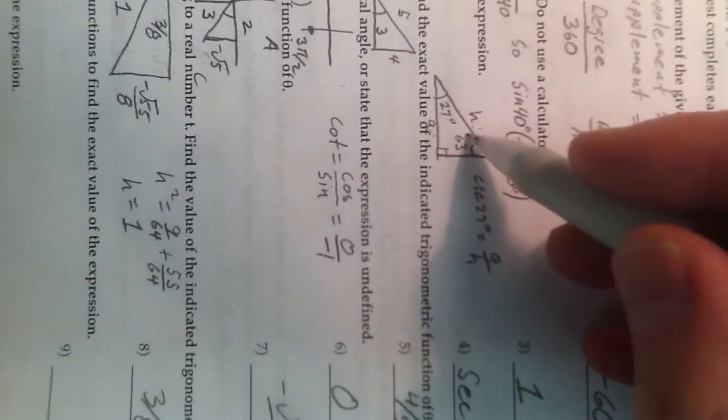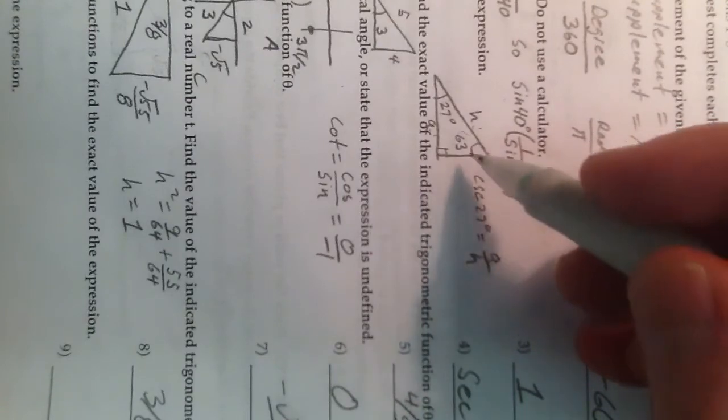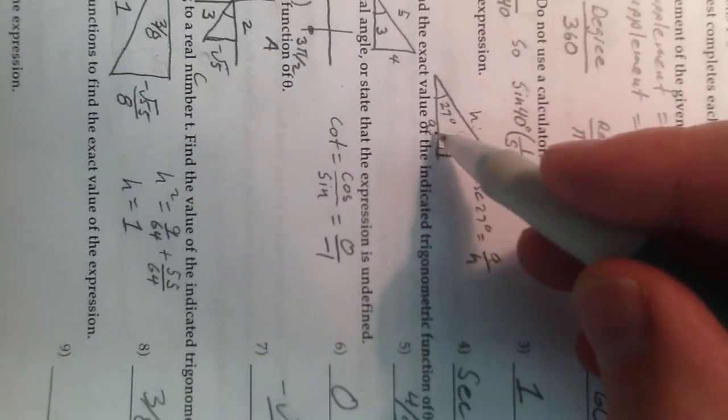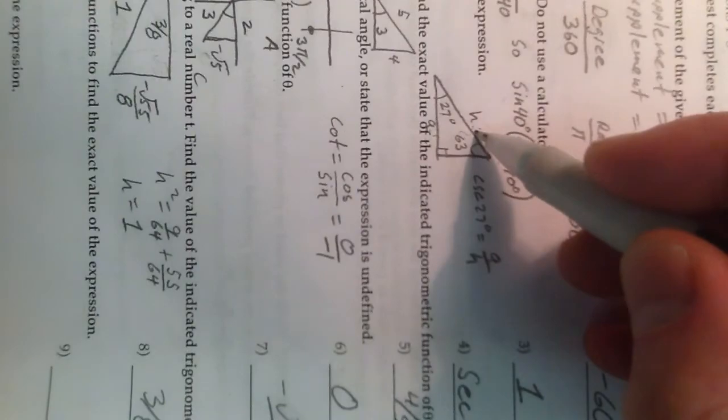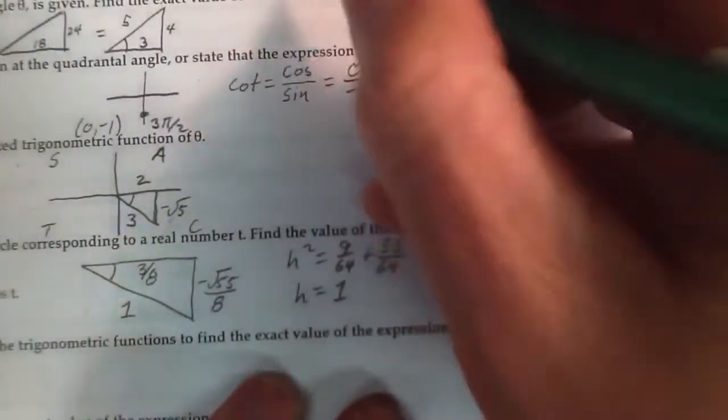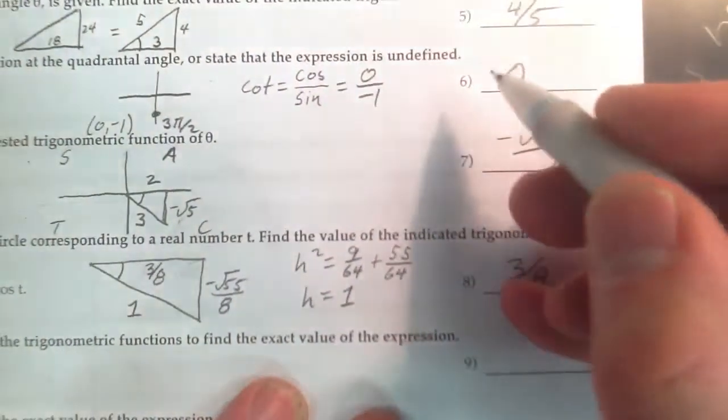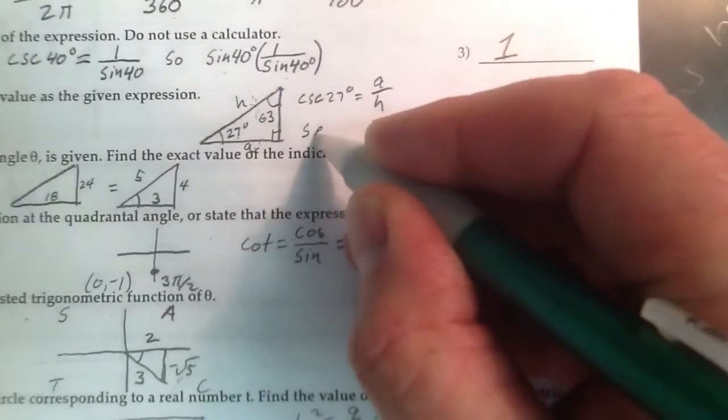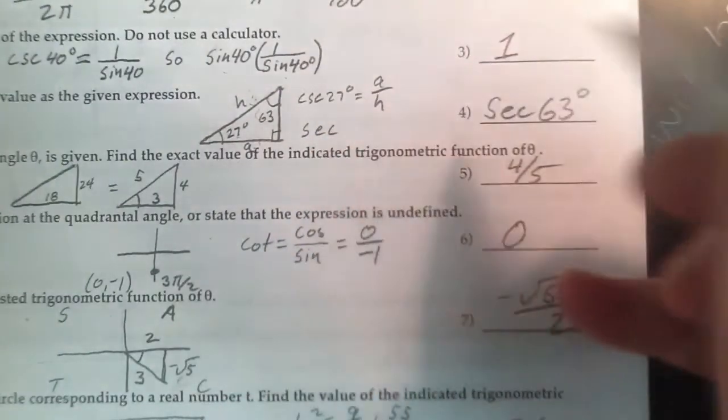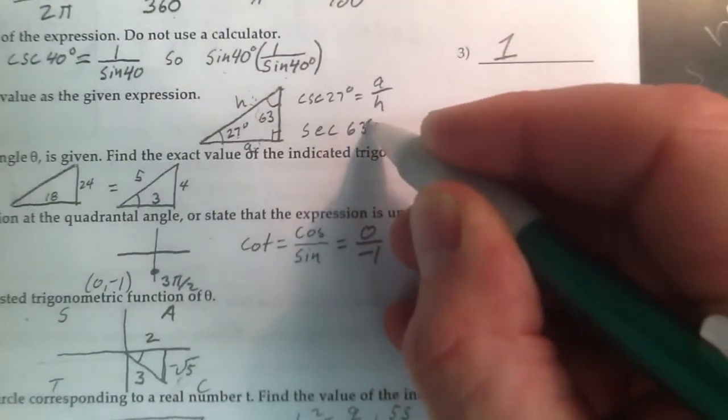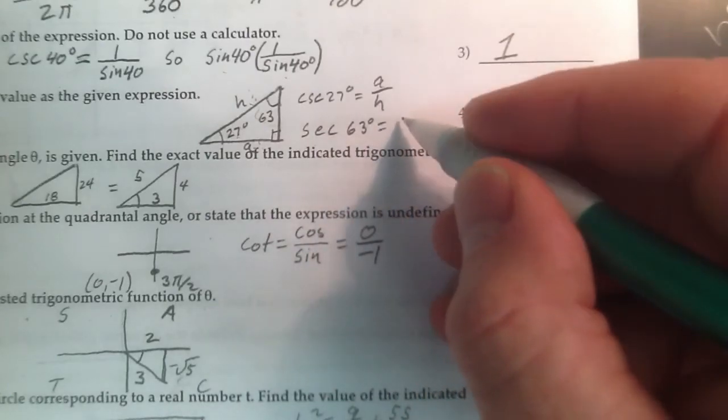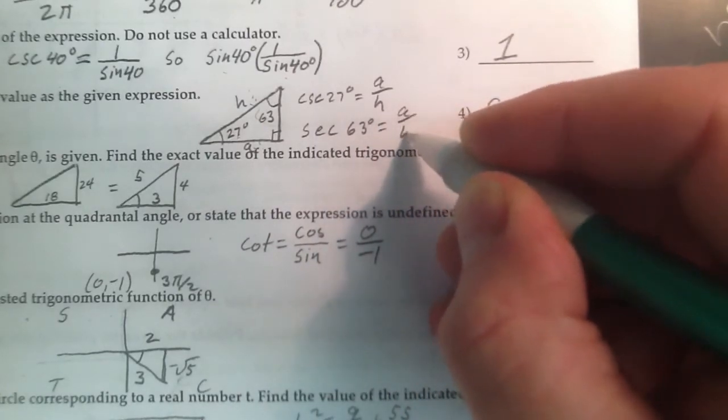Well, from this complementary angle, it would be hypotenuse divided by adjacent. That would be the secant. So the secant of 63 degrees would give me this same adjacent over hypotenuse.